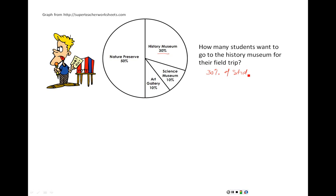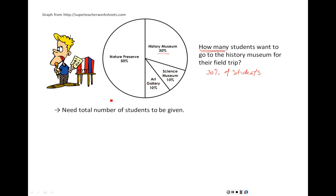However, this is really not what the question is actually asking us to find. If it wanted to know what percentage, the question is going to ask 'what percentage.' In this case, we have a slight variation. The question asks us how many students want to go to the History Museum. We do not have enough information to answer this question right now. All we know is that 30% of them want to go, but without knowing how many students there are in the class, we have no idea how to get this information. We need the total number of students to be given for us to figure out a number from a pie chart.